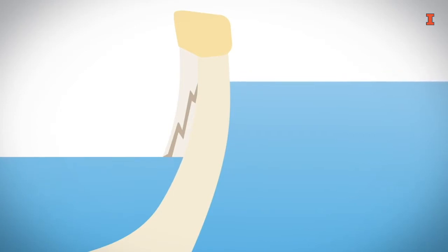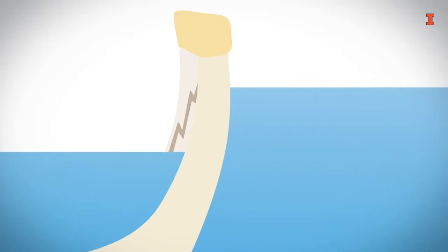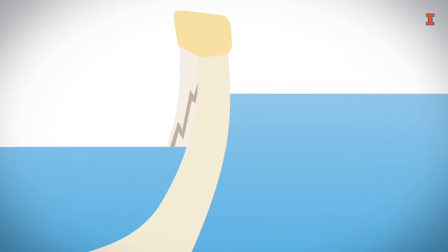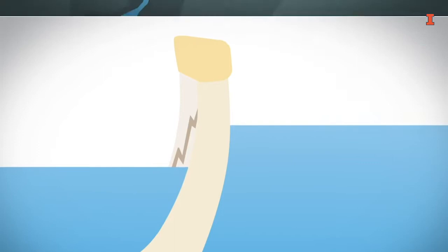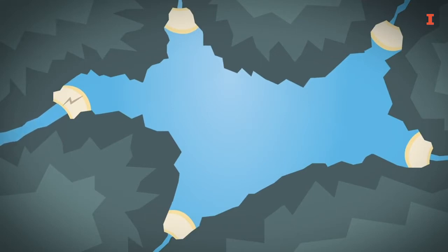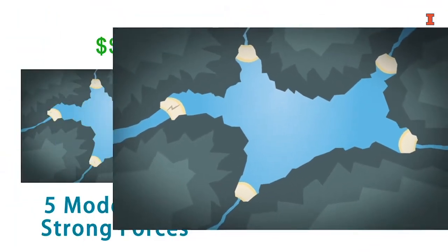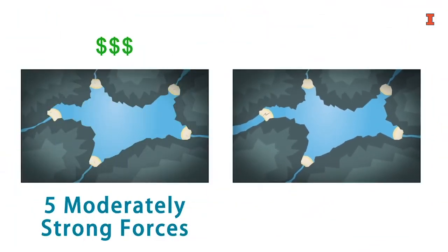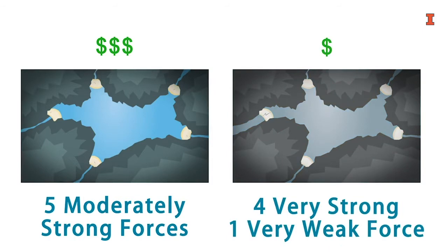It wouldn't matter that the remaining four dams are strong and still standing tall. In the same way, profits in an industry are susceptible to the weakest of the five forces. An industry with five moderately strong forces will be more profitable than one with four very strong ones and one very weak force.